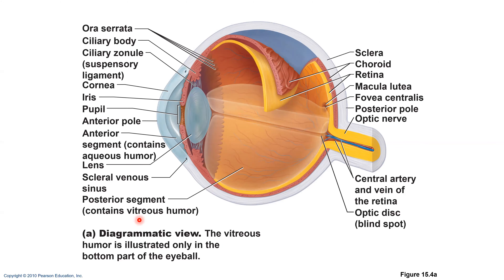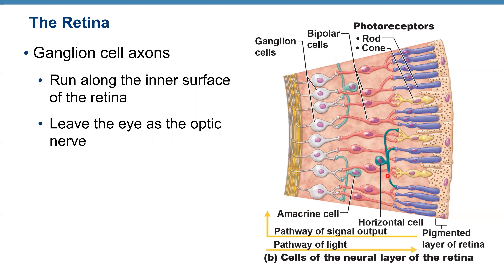The neural layer is made of photoreceptors — rods and cones. Then we have bipolar cells, called bipolar neurons because they have a cell body and two processes. Then ganglion cells — neurons whose long axons bundle together to form the optic nerve. You also have horizontal cells and amacrine cells, but you are only responsible for remembering photoreceptors, bipolar cells, and ganglion cells.